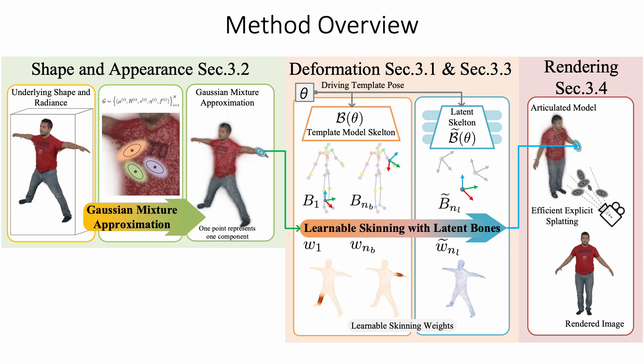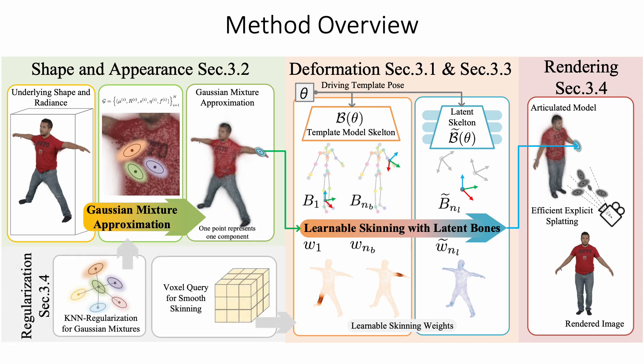Although the GMM is powerful, its explicit point-based nature is not as smooth to optimize as modern NeRFs. We address these challenges by using k-nearest neighbor variance regularization and distilling the learnable skinning weights to voxel grids. More details are in section 3.4.